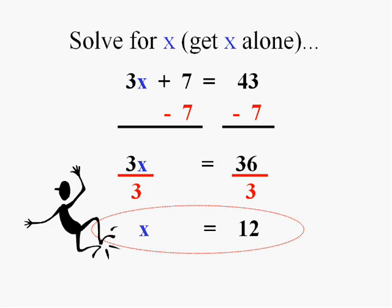The answer is x equals 12. And if we take 12 and put it back into the original equation, we'll have 3 times 12, which is 36, plus 7, and that does in fact equal 43. So this is the one and only solution of this equation.